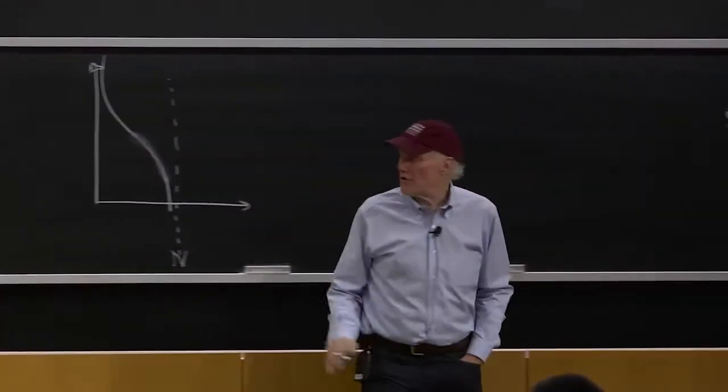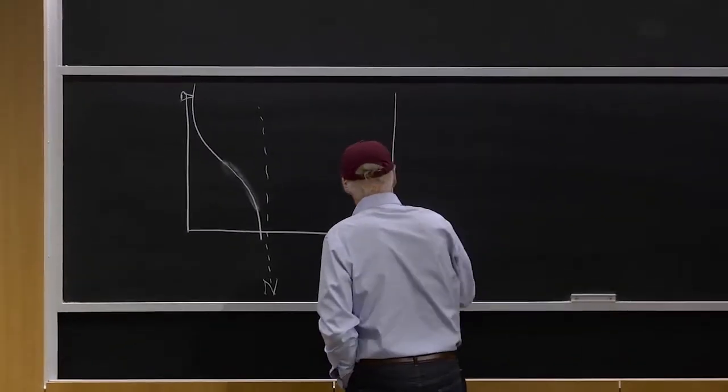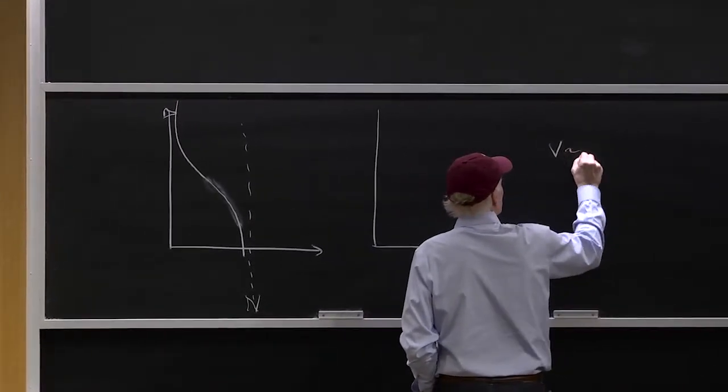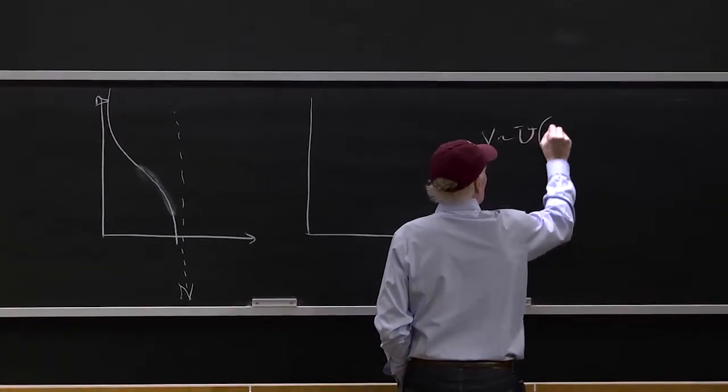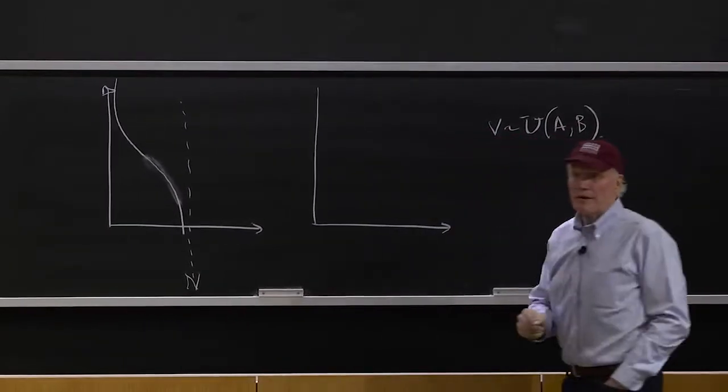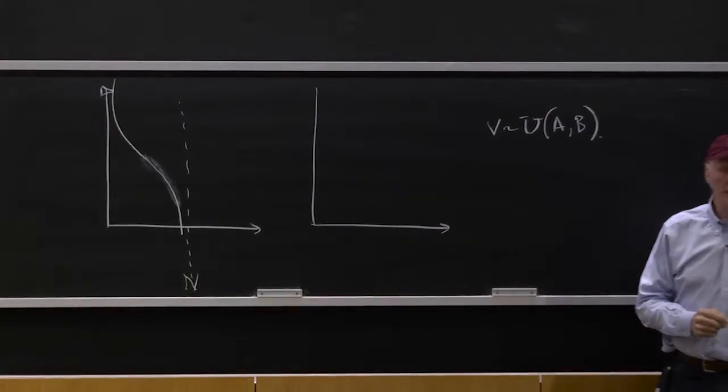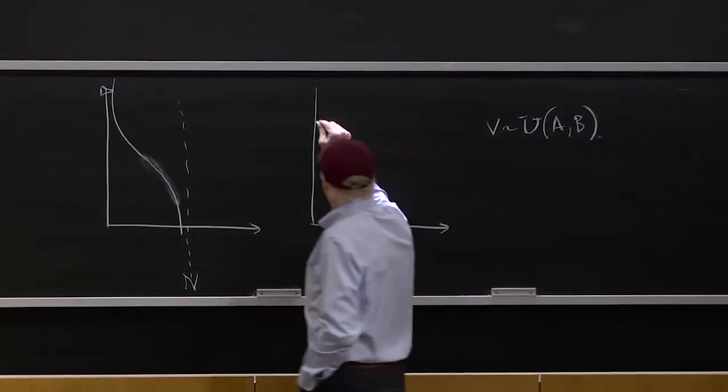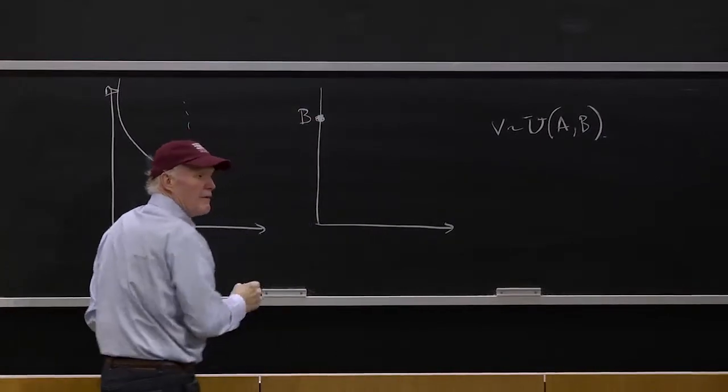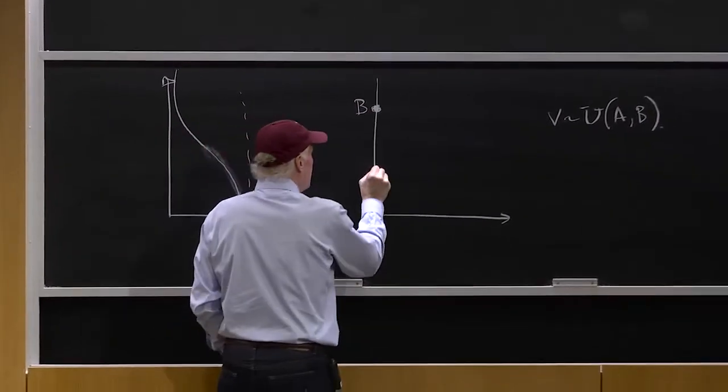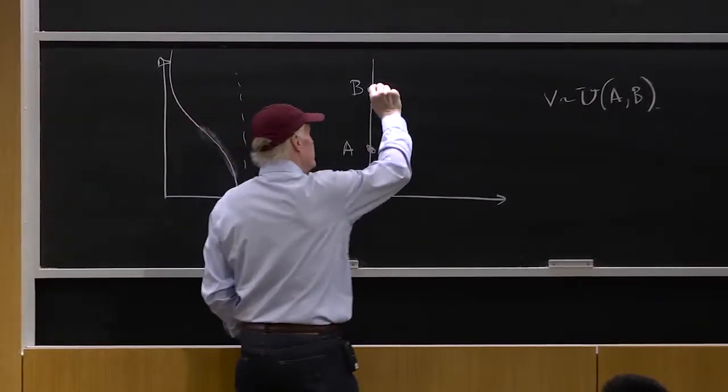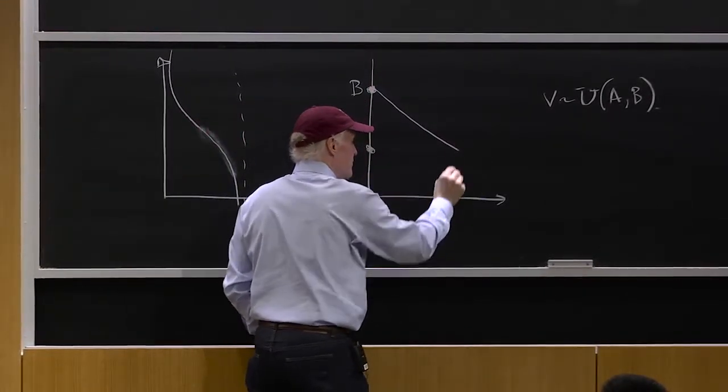What if it was uniform? What if the distribution of values was uniform, v is distributed uniform on some interval A to B? What would it look like? Well, above B, nobody would buy, right? Below A, everybody would buy. So we'd just have a nice linear demand curve.